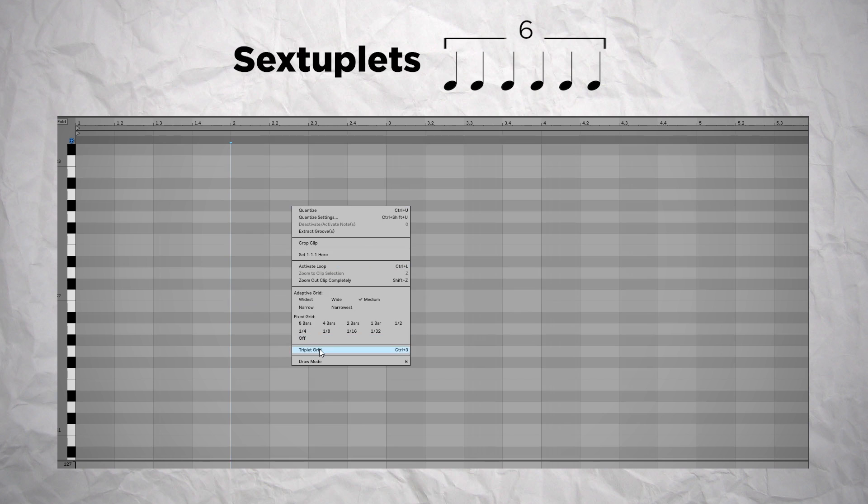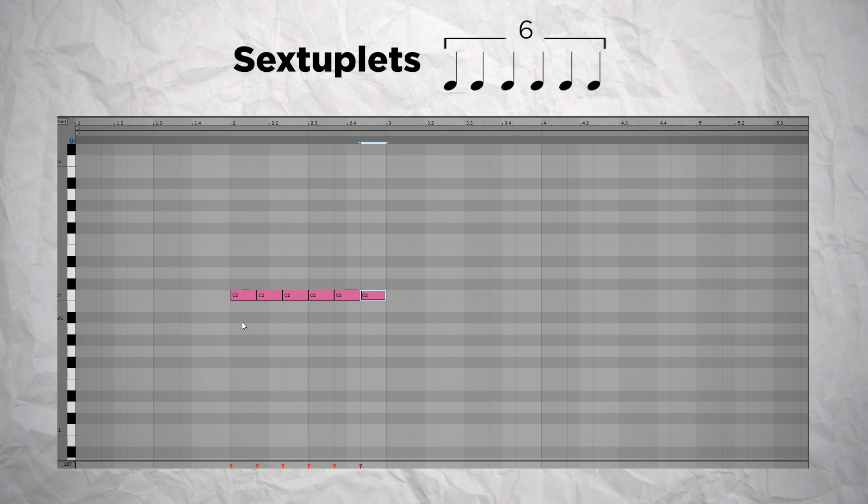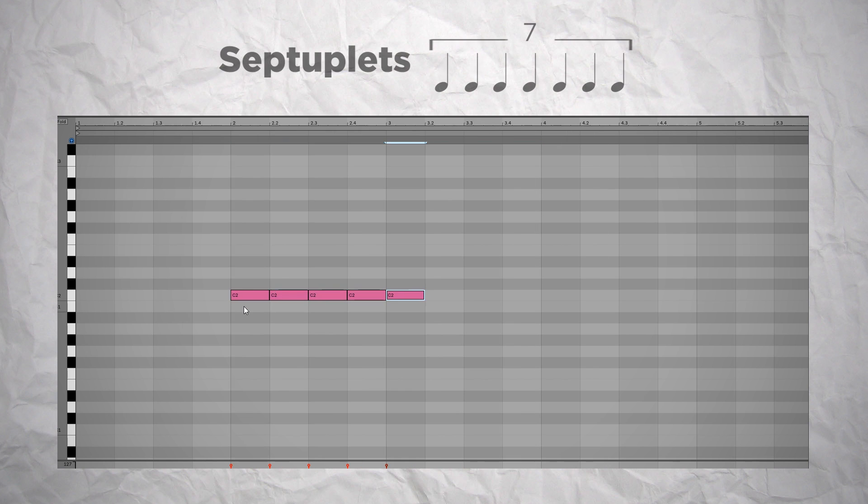For sextuplets, you can use the triplet grid, as 6 is a multiple of 3. And for the septuplets, you put 8 notes, so the septuplet plus 1 note, then select them and squash them like before.